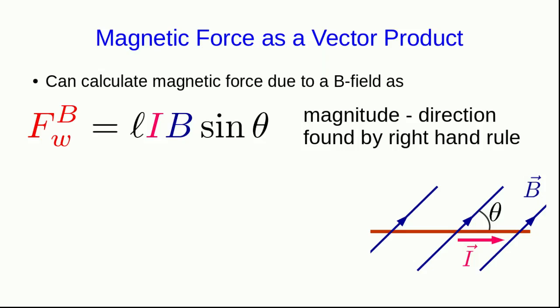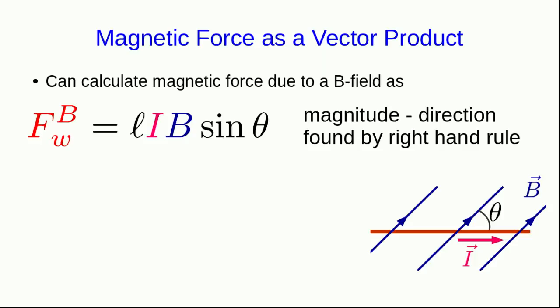So we've already seen that a magnetic force is calculated from a current in a magnetic field acting on a wire of length L, as given here, where that only gives the magnitude, and we have to find the direction by a right-hand rule. But if you compare that with the definition of the cross product, you can see that we can write a magnetic force vector nice and compactly in terms of a cross product of the current with the B field, all multiplied by the length, which is a scalar.